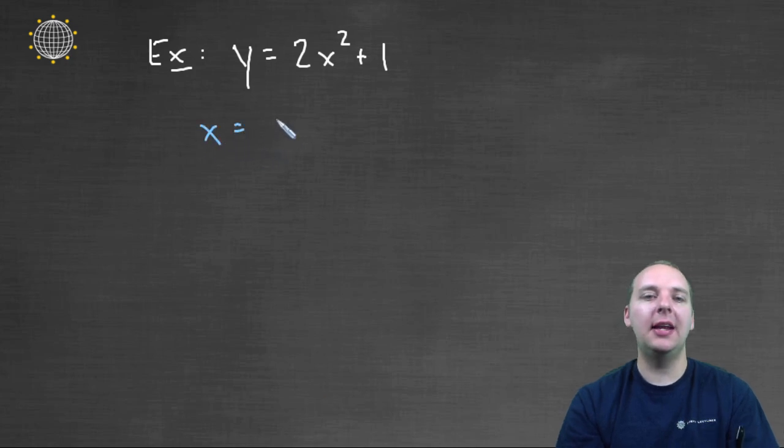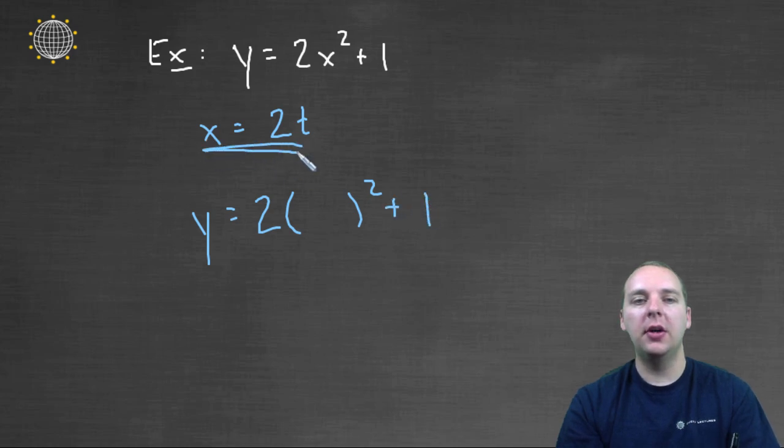For this time, let's let x equal 2t instead of just t. Well then your y that used to be 2x squared plus 1, we're just going to come back up here and we'll take whatever x was parametrized to be, in this case 2t.